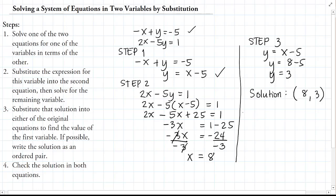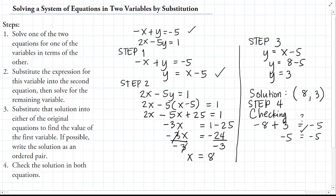For the last step, Step 4, we check the solution. The ordered pair (8, 3), when substituted into the original equations, should make both equations true. For the first equation: negative 8 plus 3 equals negative 5 — yes, negative 5 equals negative 5, so it checks out. For the second equation: 2 times 8 minus 5 times 3 equals 16 minus 15 equals 1 — yes, 1 equals 1. Our solution is confirmed to be (8, 3).